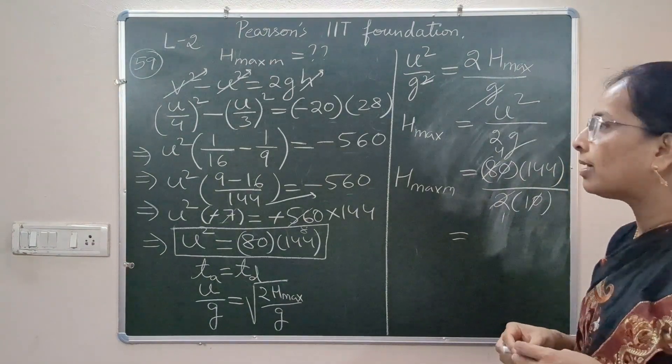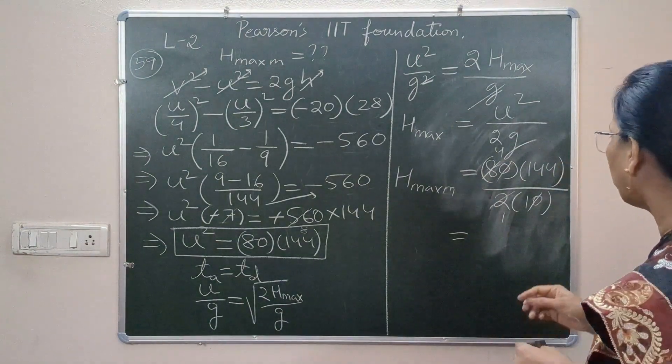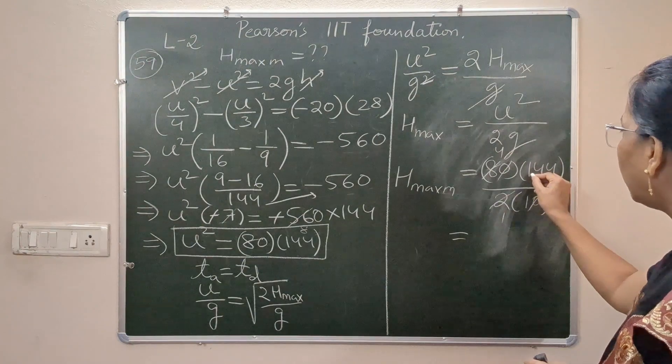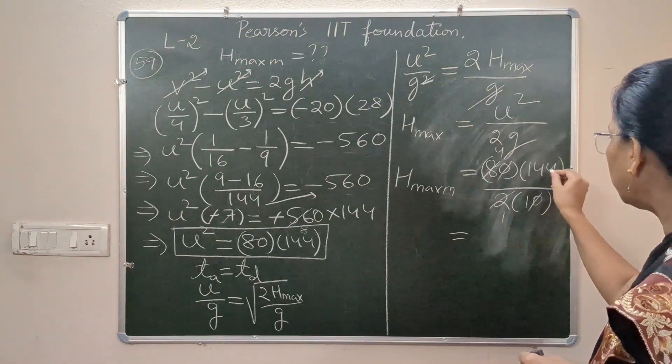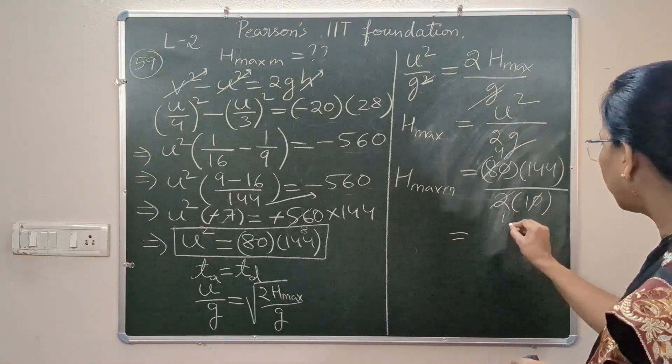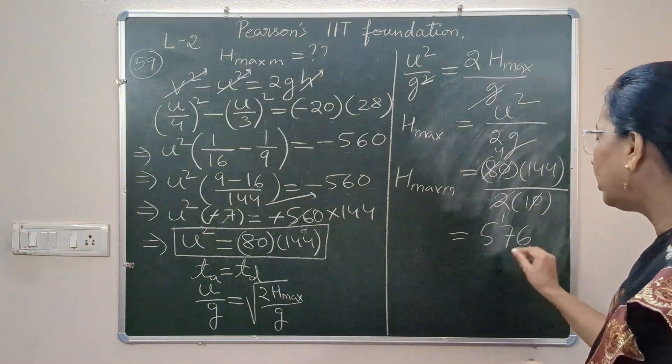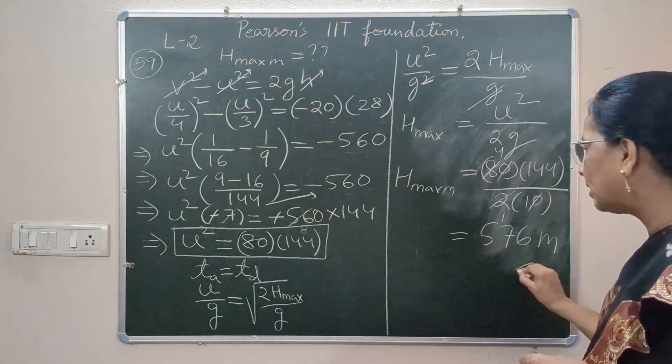So the maximum height attained by the thrown body or object is 4 times 144, which turns out to be 576 meters, and this is the answer.